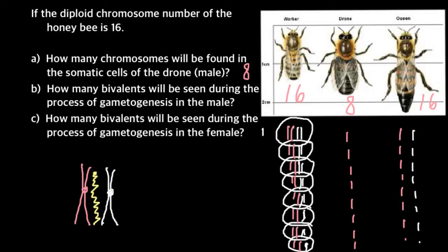The male can produce sperm, but this process would be more like mitosis. One cell would duplicate its chromosomes and then divide into two cells. So one haploid cell would produce two haploid cells, whereas one diploid cell in the female would produce four haploid cells. Gametes in the female are haploid, and one diploid cell produces four haploid gametes. But in the male, one haploid cell produces two haploid cells — that is the difference.